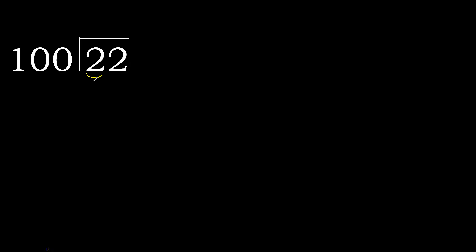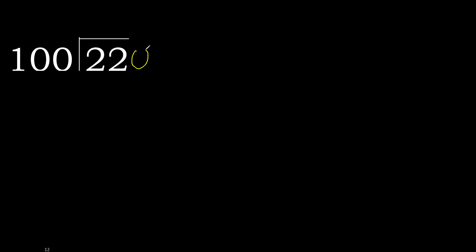22 divided by 100. 2 is less, therefore next. 22 is less, therefore next. There is no number, therefore complete — always complete with 0. Here: 0 point.